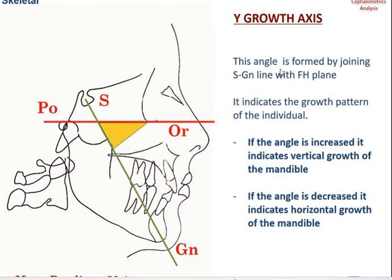The last skeletal parameter is the Y growth axis. Two lines are constructed — the Frankfurt horizontal plane and a line running from sella to nasion — and the angle between them gives the Y growth axis. This indicates the growth pattern of the individual. An increased angle indicates vertical growth of the mandible, whereas a decreased angle indicates horizontal growth. The mean reading is approximately 59.4 degrees.